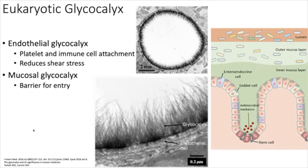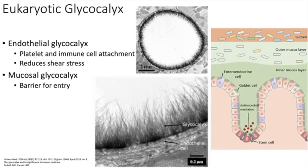Mycobacteria — such as Mycobacterium tuberculosis — look a little different. Instead of LPS, they have mycolic acid — a giant glycolipid that makes staining unusual. You'd use an acid-fast stain rather than a Gram stain; mycobacteria tend to be gram-variable. Funguses — eukaryotes, not bacteria — also have cell walls. Fungal cell walls often include chitin as the classic polysaccharide, and the composition varies by fungal species, including different sugars like galactose and mannose.